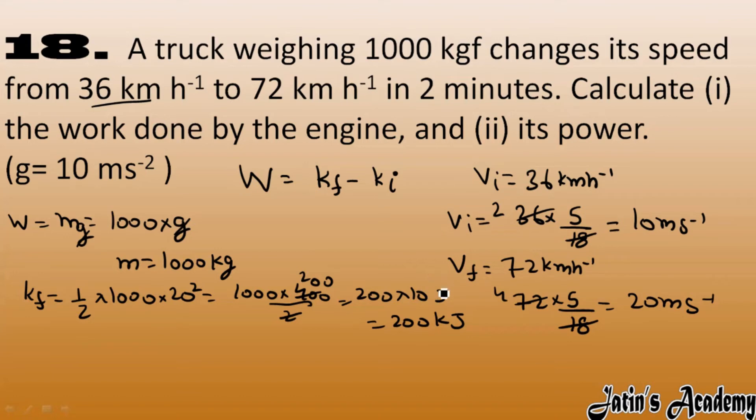Now we have to calculate initial kinetic energy. Initial kinetic energy we have half mass 1000 and velocity we have 10 square. So 10 square is actually 100. So 100 which cancels out with 50, so 50 into 10 raise to power 3 joule, which is 50 kJ.